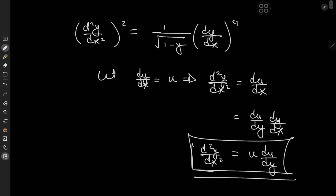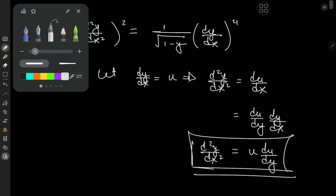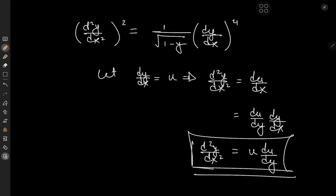Our differential equation is now: on the left hand side we have (u · du/dy)² equal to 1 over root(1 minus y) times u to the fourth power.